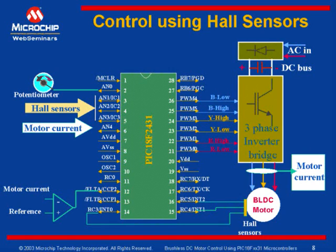Optionally, with this, Timer 5 can be captured on each transition. This Timer 5 value can be used for determining the speed at which the motor is running. This gives a low-resolution speed measurement using Hall sensors.